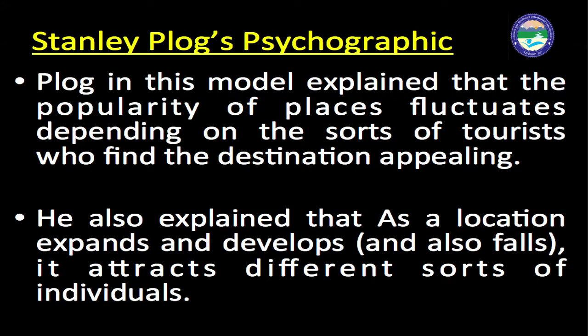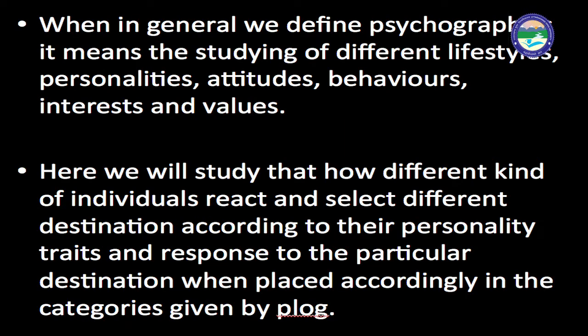Starting with Stanley Plog's psychographic model, Plog explained that the popularity of places fluctuates depending on the sorts of tourists who find the destination appealing. He also explained that as a location expands, develops, and declines, it attracts different sorts of individuals. In general, psychographics means the study of different lifestyles, personalities, attitudes, behaviors, interests, and values.